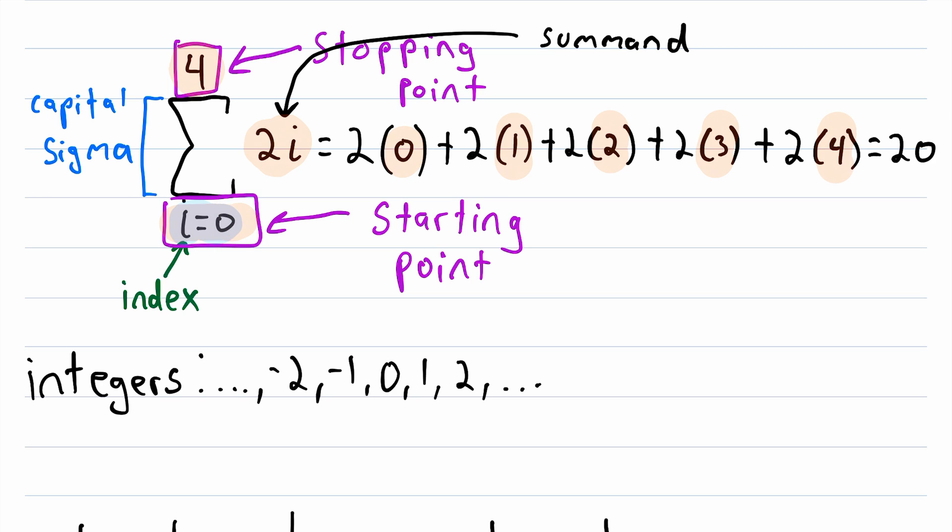Of course, below the sigma, we also see the starting point for our index. And above the sigma, we see our stopping point. So, all this notation means is to add the summand up over and over again, starting at the starting point and stopping at the stopping point, and incrementing the index variable up one at each step.